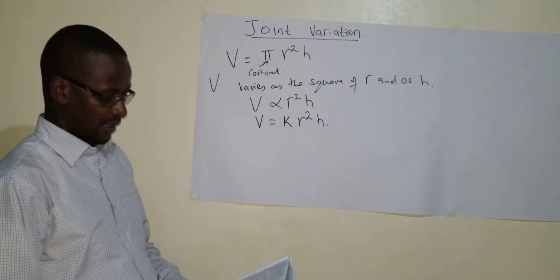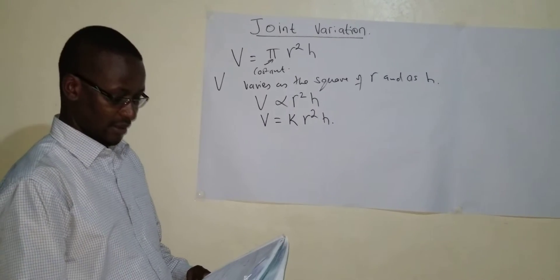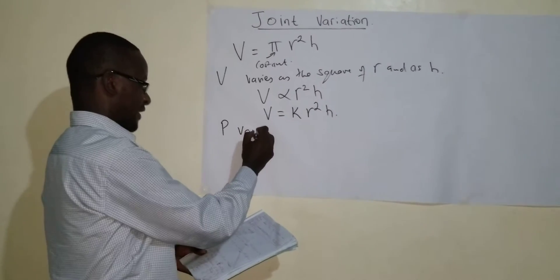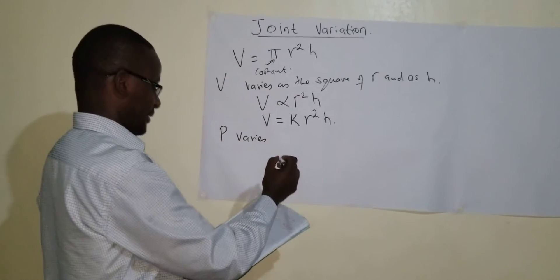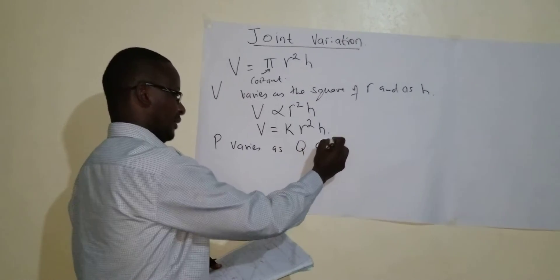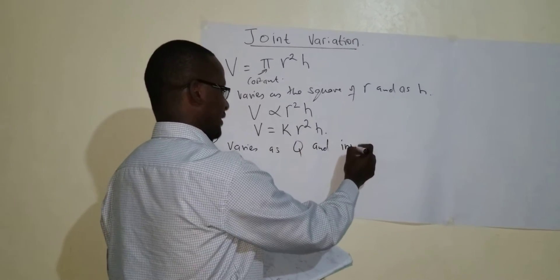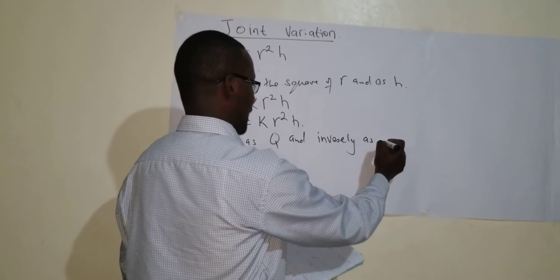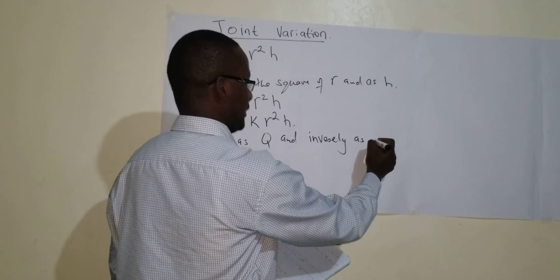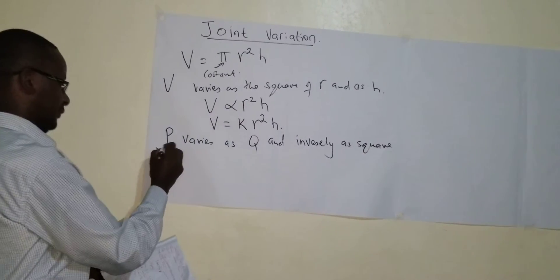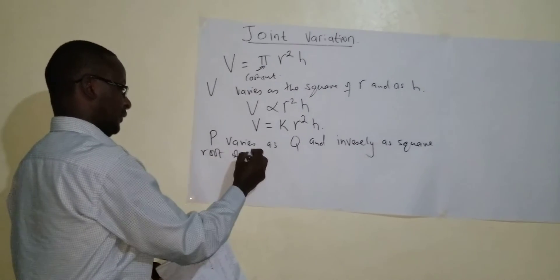For example, if you are told that a quantity P varies as Q and inversely as square root of R.